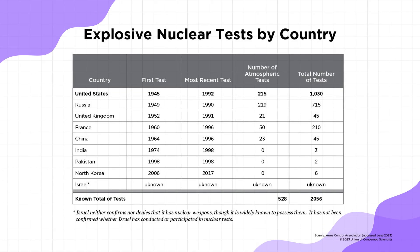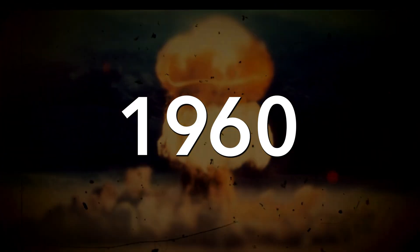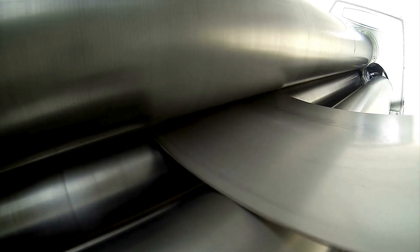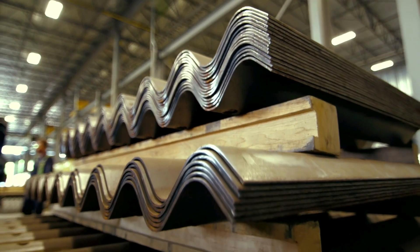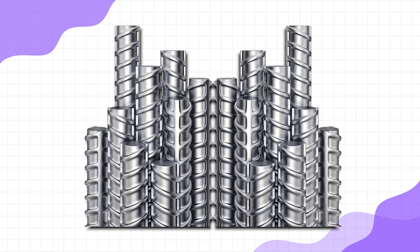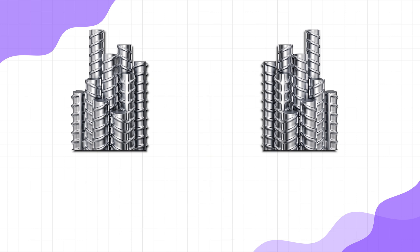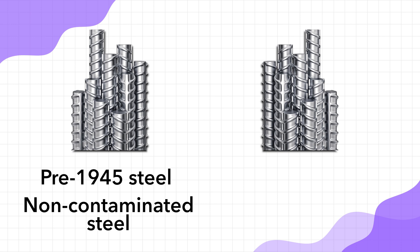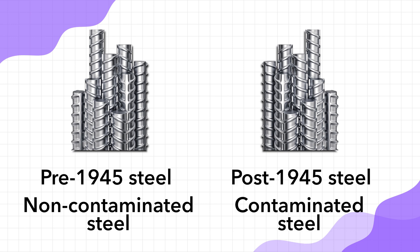Did you know that because of all the nuclear tests we have done — the bombs we exploded in the 1940s, 50s and 60s — all the steel produced in the world after that is contaminated by nuclear radiation? As a result, all steel in the world is divided into two types: pre-1945 steel, which is called non-contaminated steel, and post-1945 steel, which is contaminated steel.